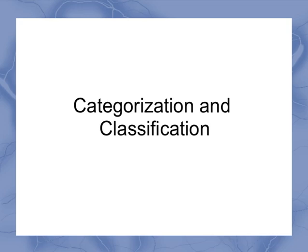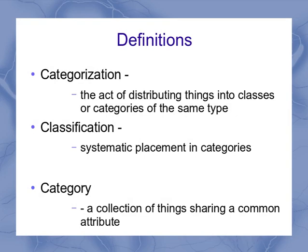In this video, we want to explore categorization and classification, particularly in the context of science. The definitions for categorization and classification basically overlap, depending on what dictionary you use. It's a process or an act of distributing or placing individual things into categories or groups of the same type of thing. Categories are a collection of things sharing some common attribute.